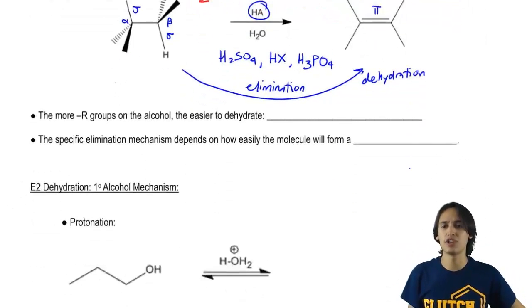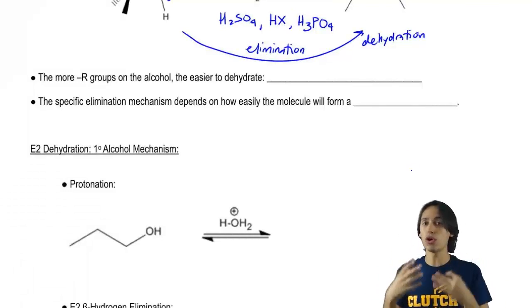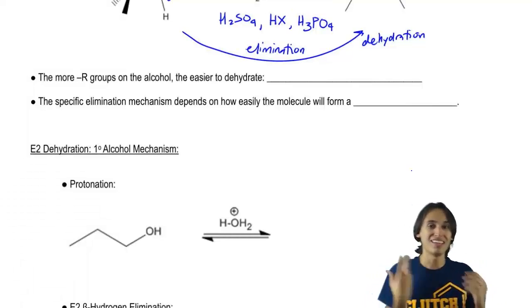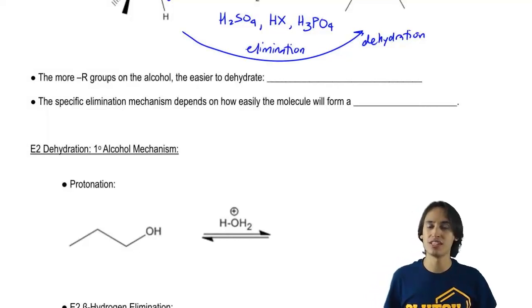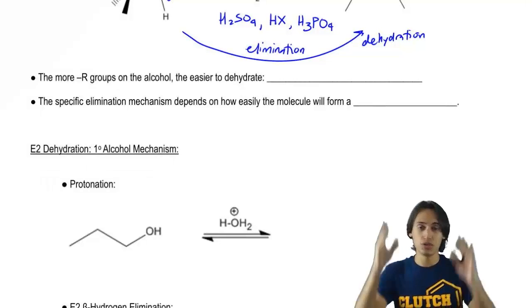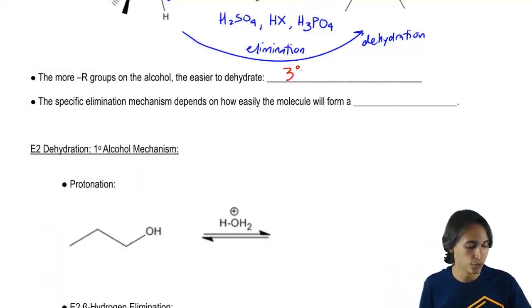So let's just talk more in depth about dehydration. There's a few facts I want you to know. First of all, the more R groups on that alcohol, the easier it's going to be to dehydrate. This is just a fact that might come up on maybe a conceptual part of your exam or a professor might even ask you, give you four different alcohols, which one's the easiest to dehydrate. Tertiary would be the easiest, secondary...